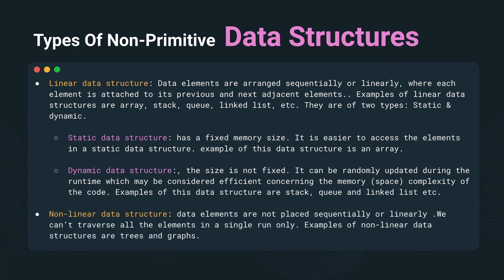In non-linear data structures, data is not placed sequentially or linearly, and we can't traverse all the elements in a single run. Examples are trees and graphs, which we will talk about in some time.